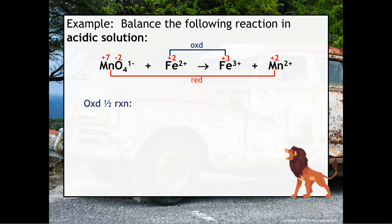Our oxidation half reaction is very similar to all the half reactions we've been writing. We'll bring down our iron, make sure we're balanced for mass, and then balance for charge.